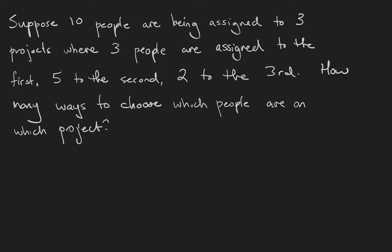Suppose that 10 people are being assigned to three projects: three people to the first project, five to the second, and two to the third. How many ways can we choose which people are on which project?